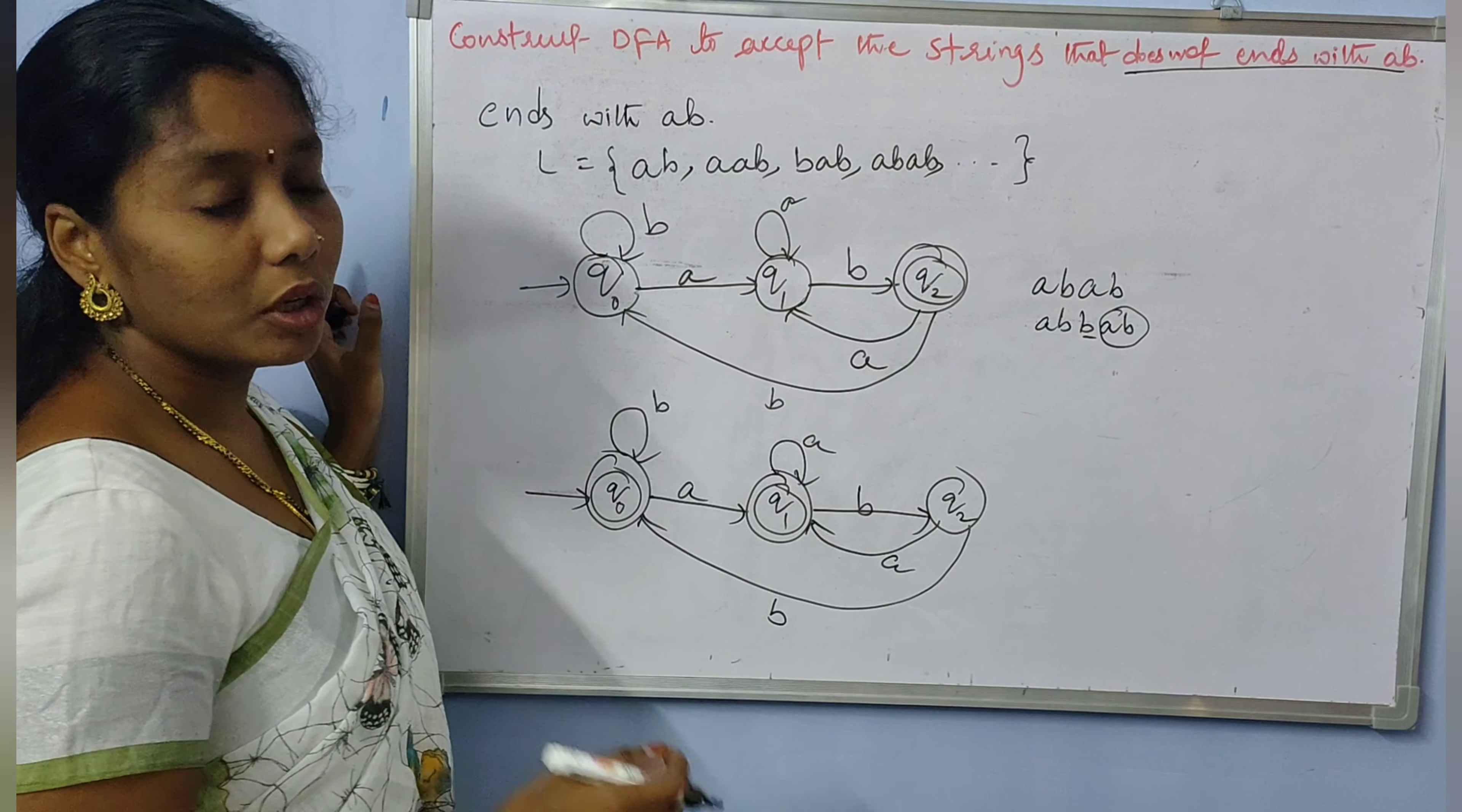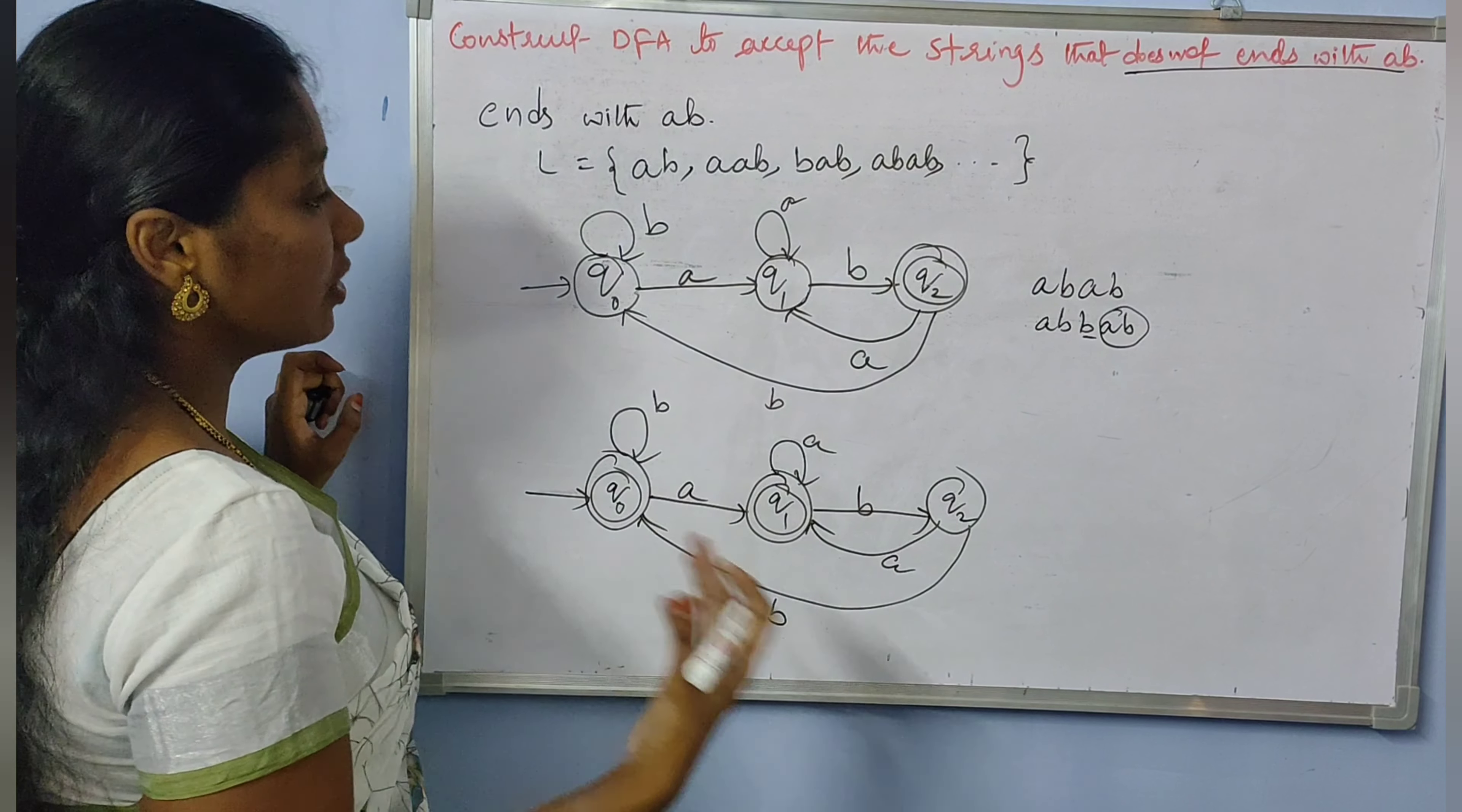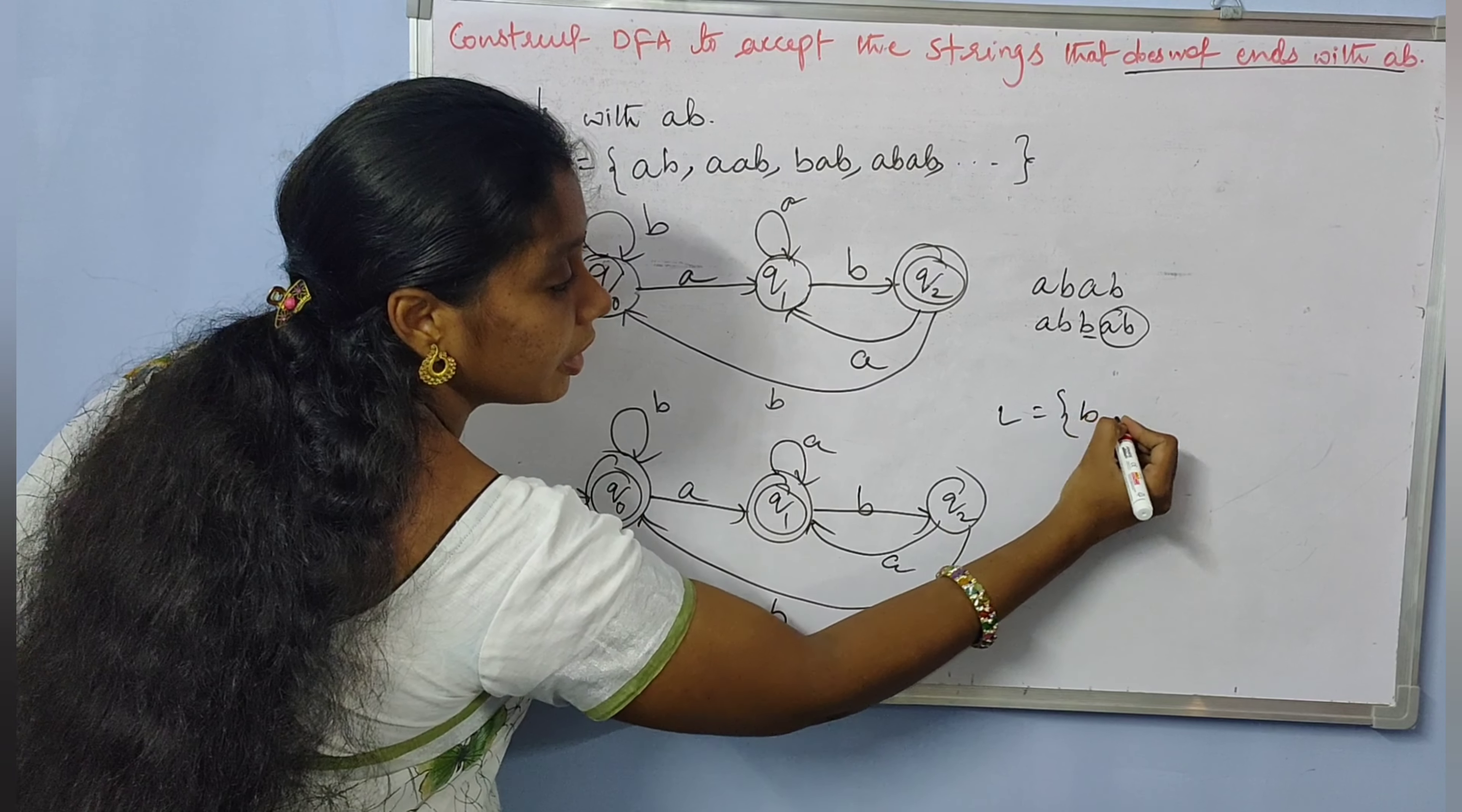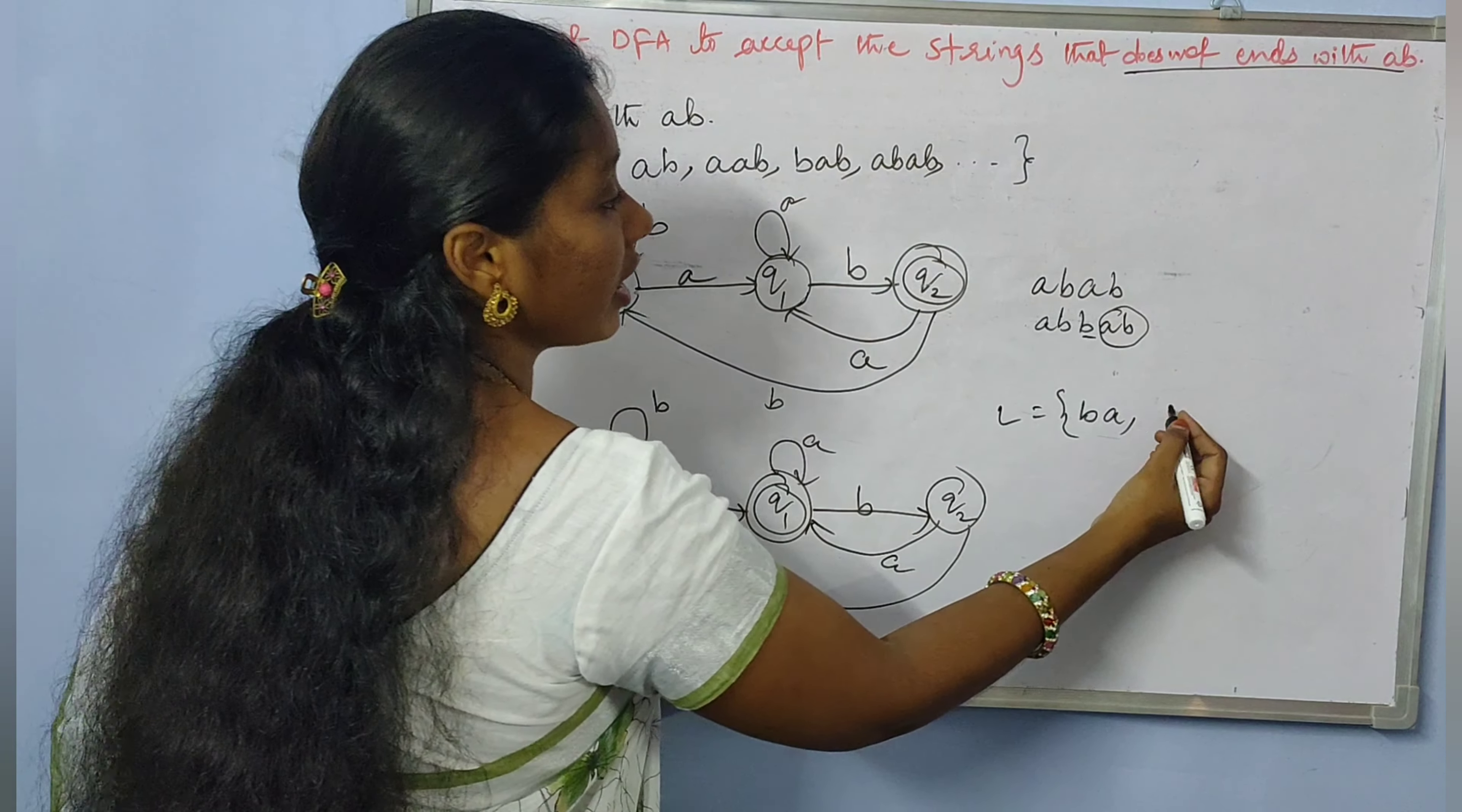So here it should accept the strings that do not end with AB. The language includes: B, A. Since AB doesn't end, BA is a string that belongs to the language.